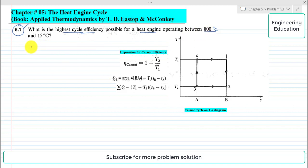So we will write the given data here. Temperature T1 is 800 degree centigrade, it is the highest temperature in this cycle. If we look to the TS diagram, temperature-specific entropy properties diagram, so T1 is 800 degree centigrade and temperature T2 is 15 degree centigrade.